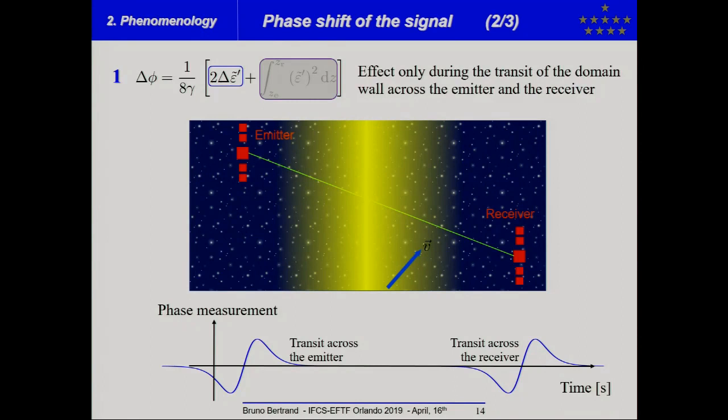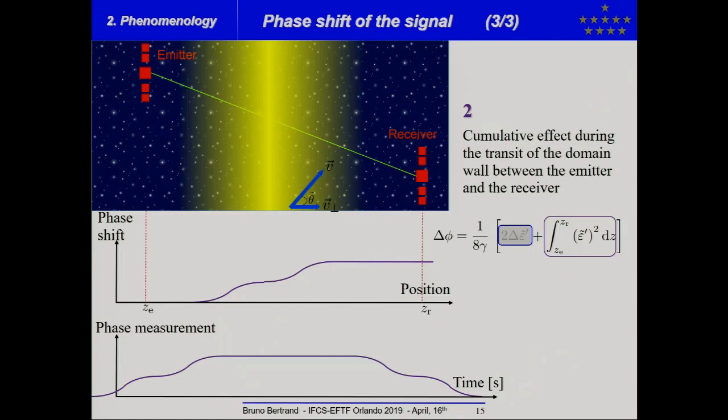You have a first effect here, where you will have phase measurement, a perturbation in the carrier phase measurement, only when the domain wall transits across the emitter and when the domain wall transits along the receiver.